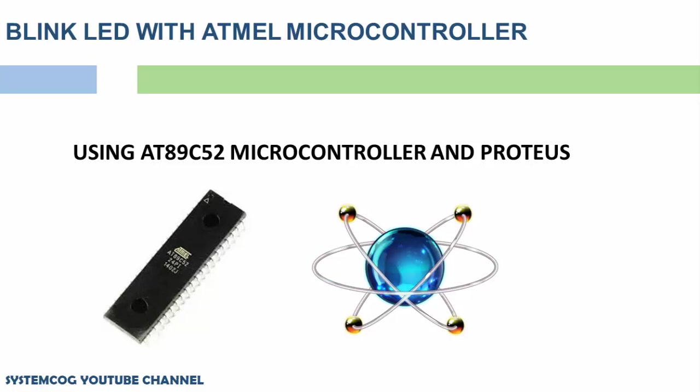In this video, I'm going to be showing how to program the Atmel microcontroller using C language with Keil compiler. I'll be writing a simple C code that will continuously blink three LEDs and use the Proteus simulation software to simulate the project. It is assumed that you already know how to write embedded C code and are familiar with the Proteus simulation software.